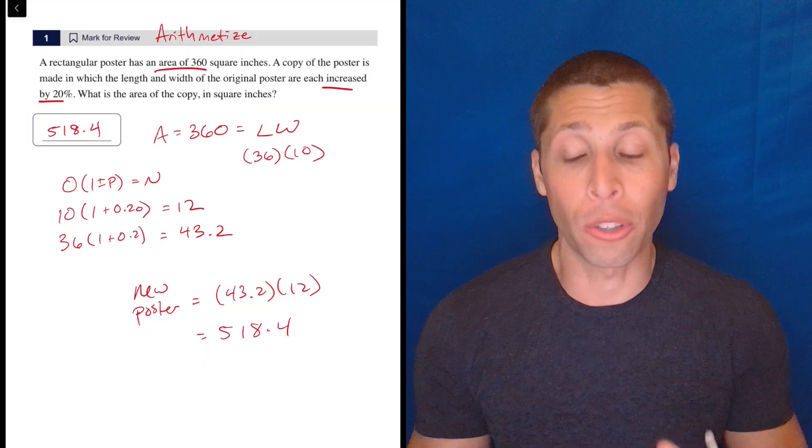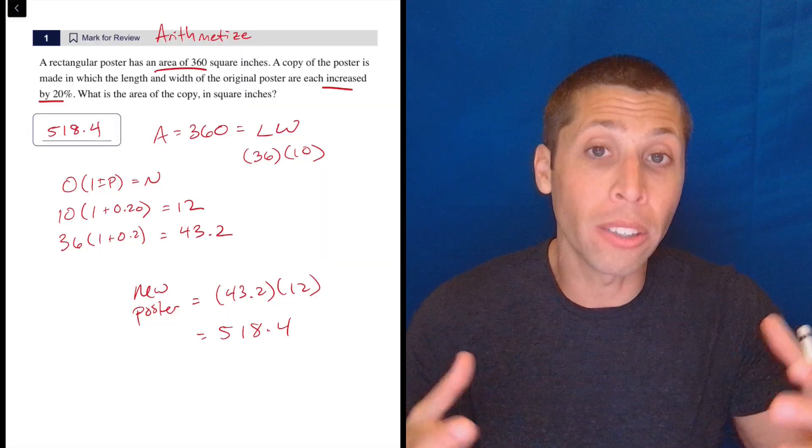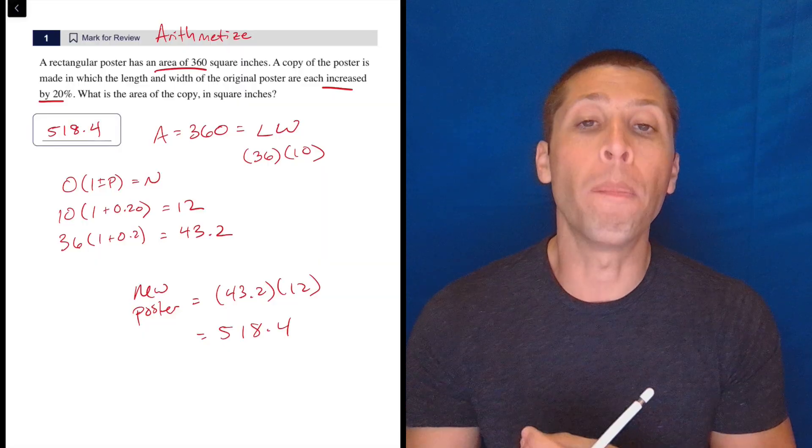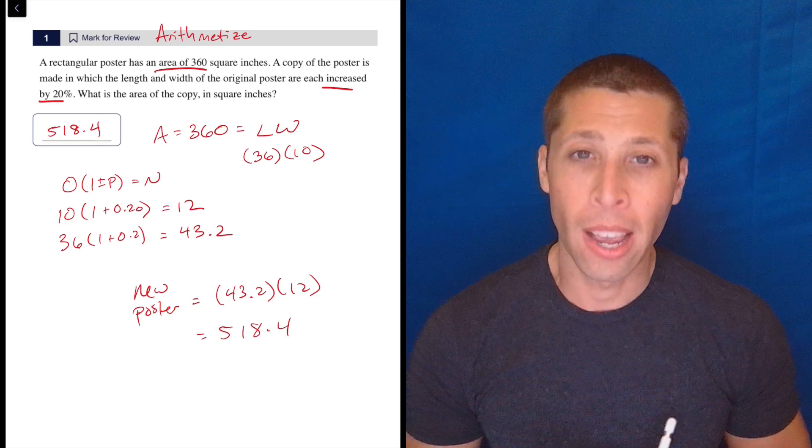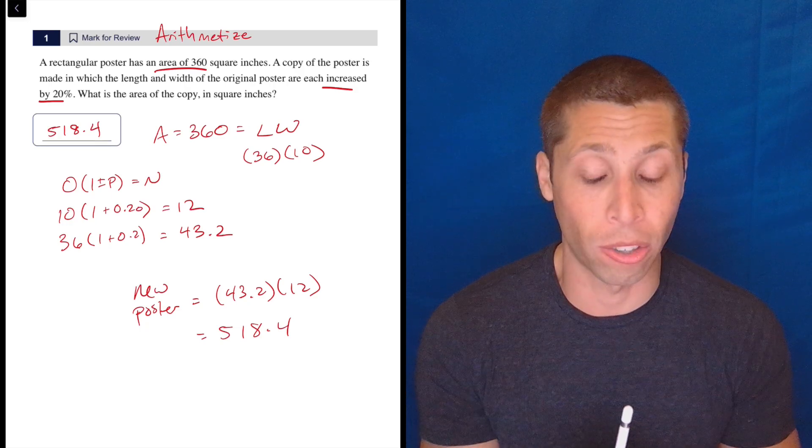We have to be able to understand that the SAT is trying to trick us and that by having real numbers here for the length and width, we are greatly decreasing the chance that they get away with it. The chance that they actually trick us or trap us on a question.